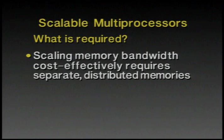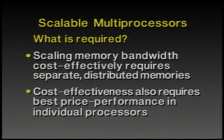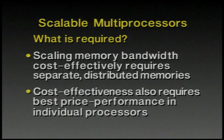An important observation is that scaling the memory bandwidth requires the use of physically distributed memories — there's no cost-efficient way to scale up memory bandwidth without physically distributing the memory. To achieve scalable cost performance, you've got to take advantage of the best price performance available in processors, meaning state-of-the-art microprocessors. We can see this trend in recently announced machines like the CM5, which chose to use an off-the-shelf microprocessor rather than build a custom processor.